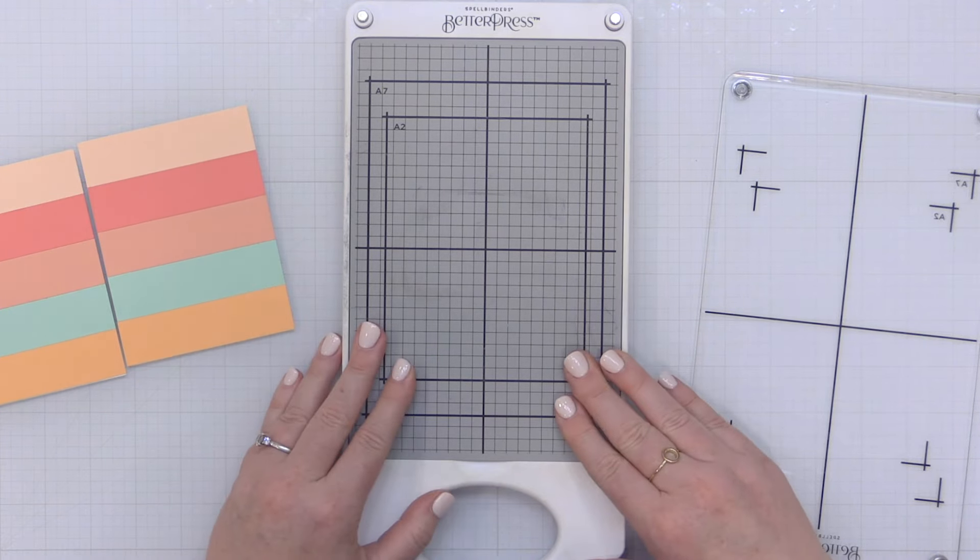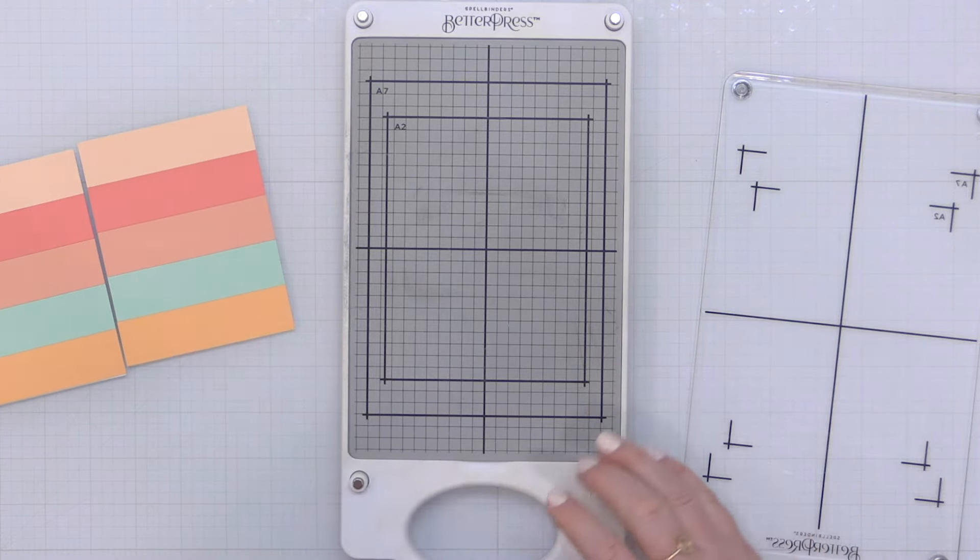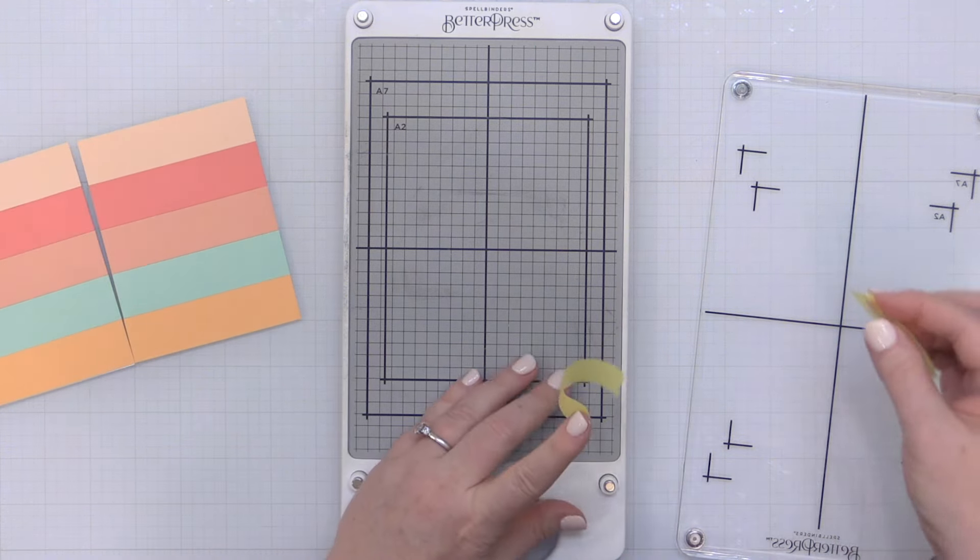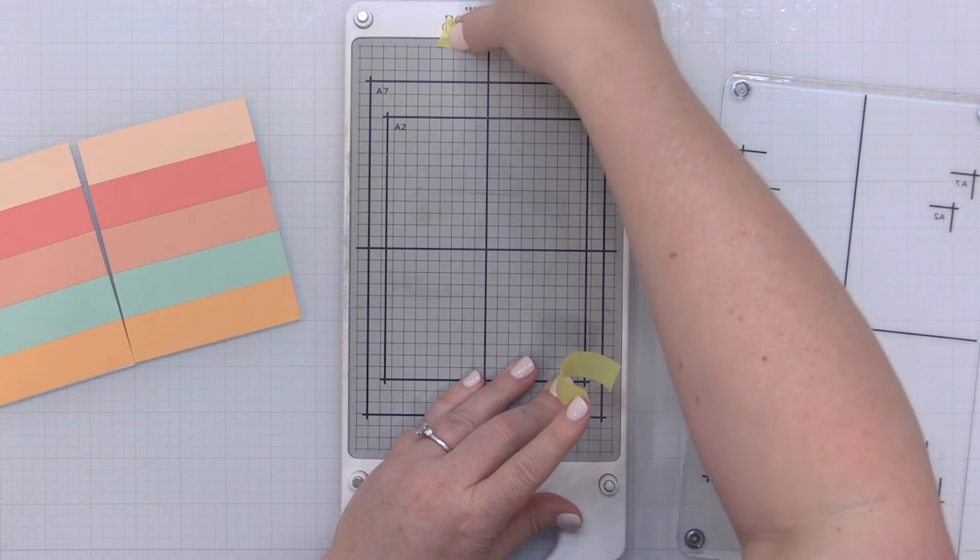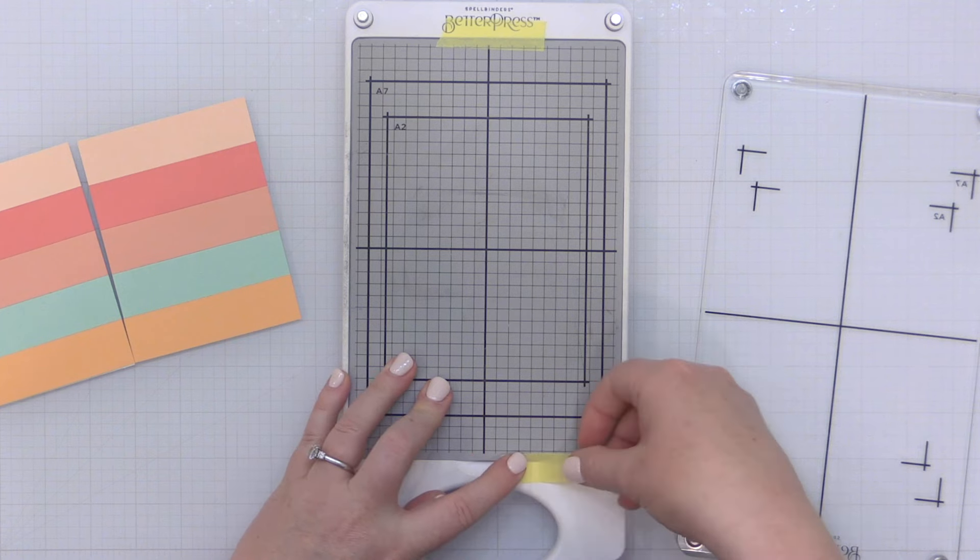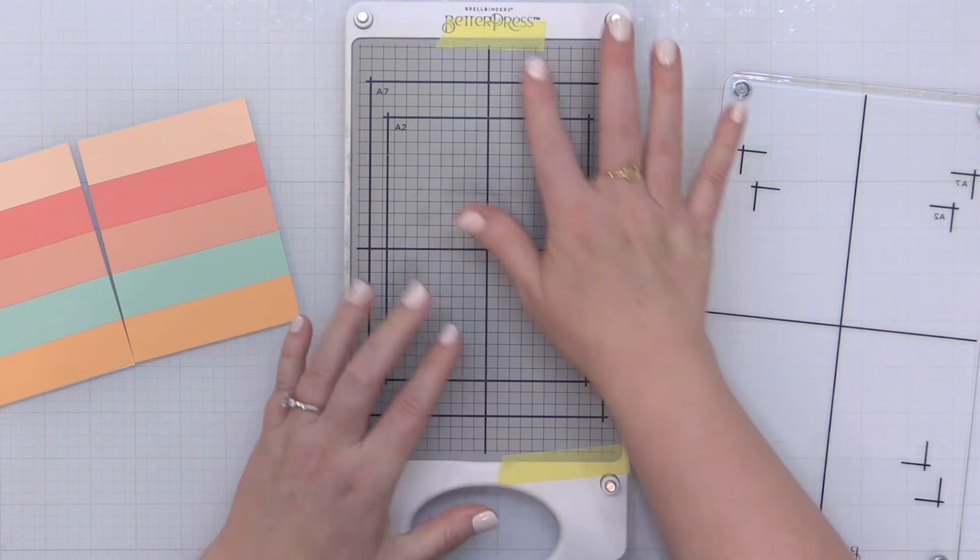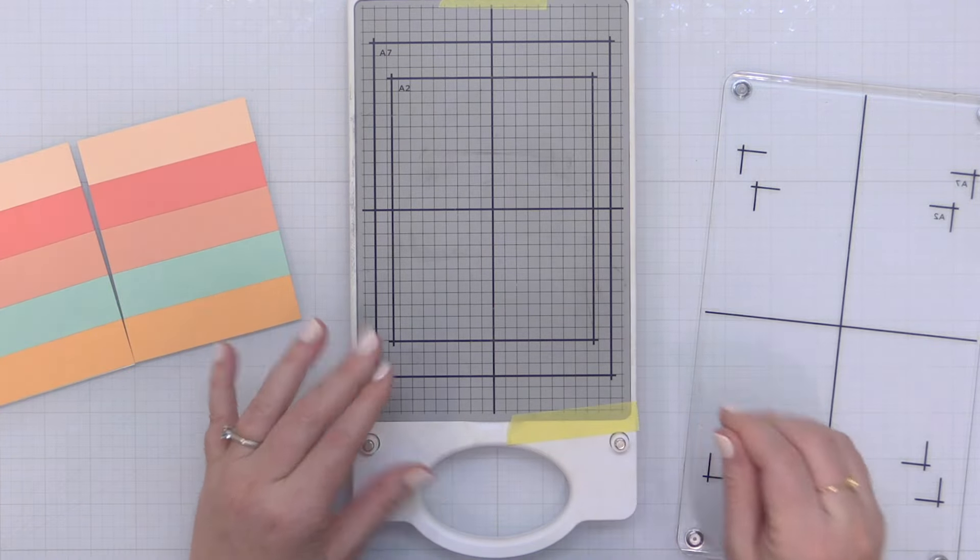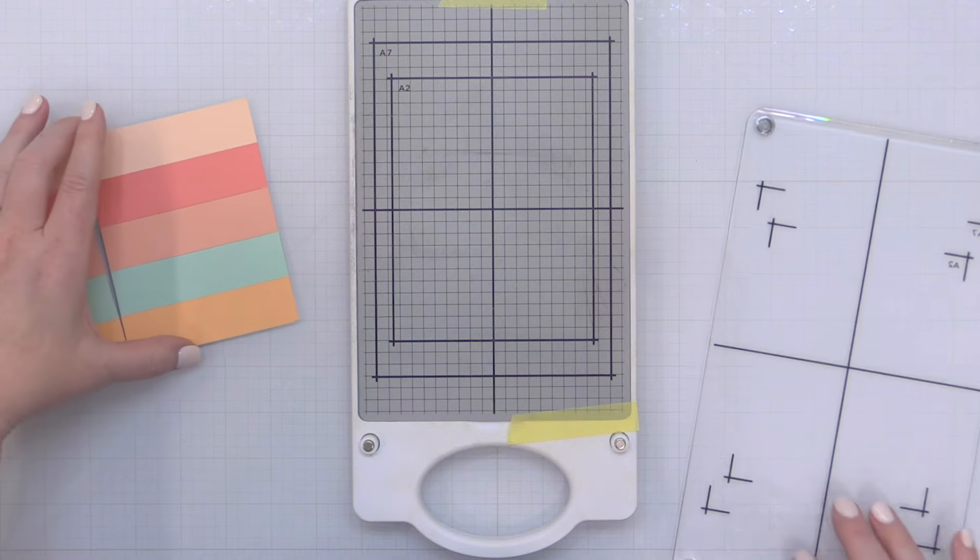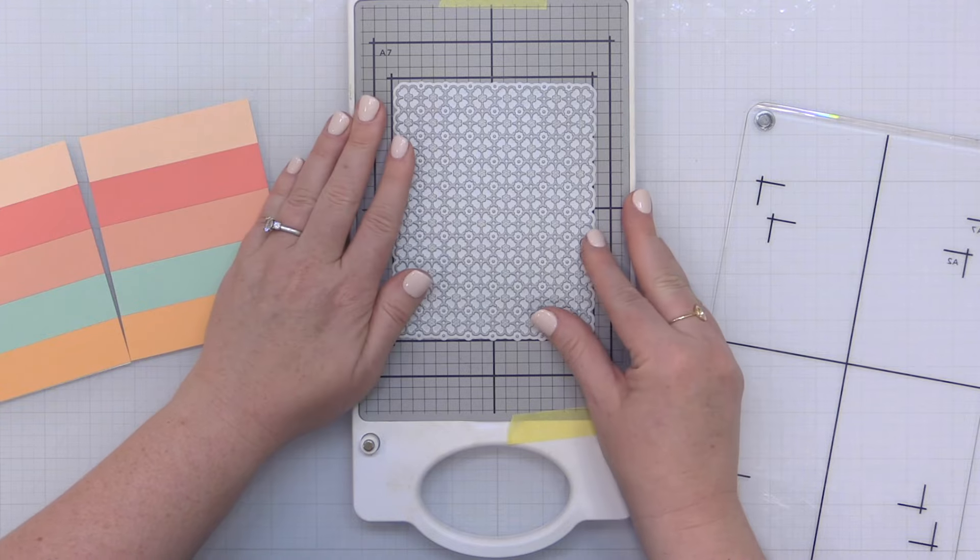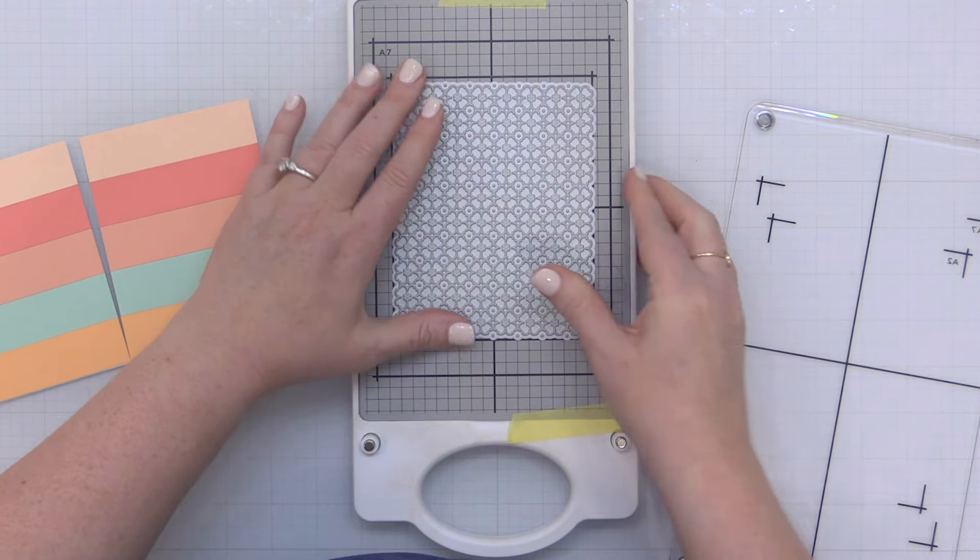Now just like your Misti stamping tool this magnetic platform can kind of move around a little bit and because I want to be able to press the same piece of cardstock multiple times in one place I'm going to push this magnetic platform into the lower right hand corner and I'm going to hold it in place with a little bit of the yellow tape that comes with the Better Press system. That keeps that magnetic platform from kind of moving around and allows me to press on the same piece of cardstock multiple times without anything moving.